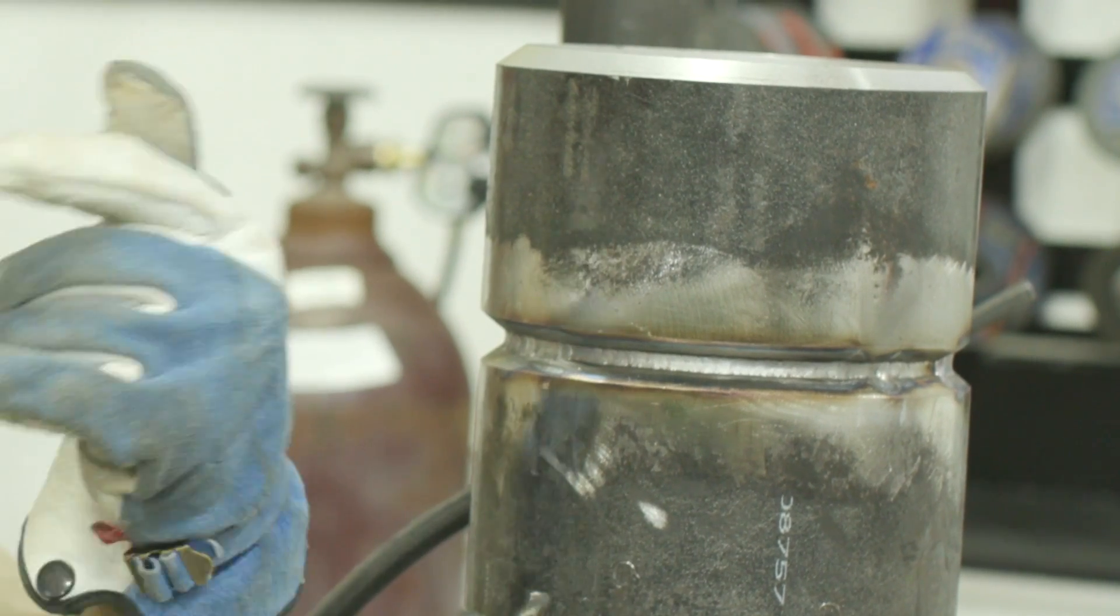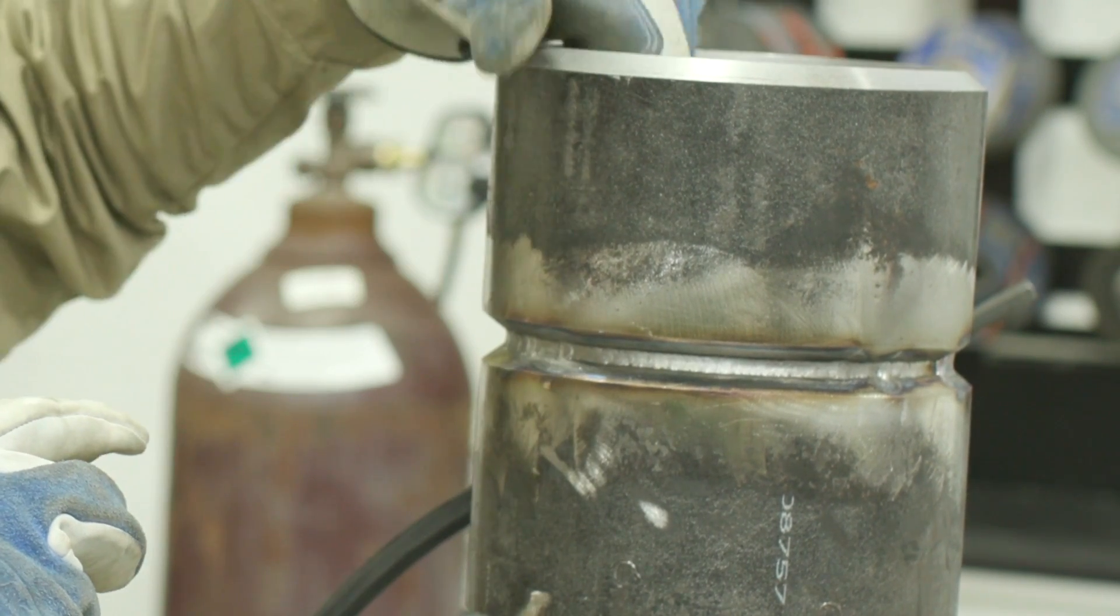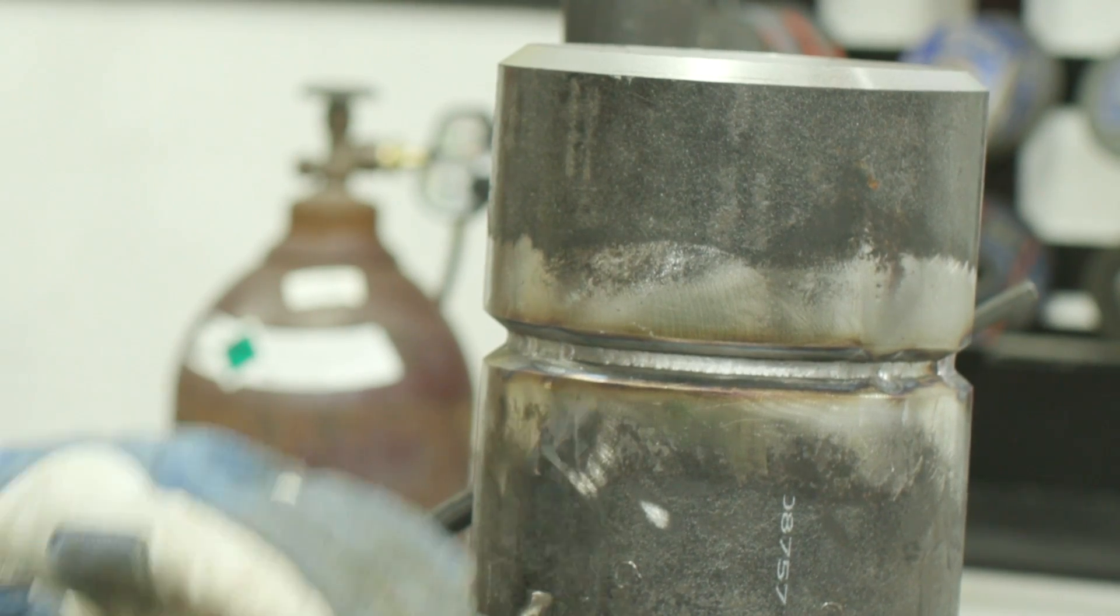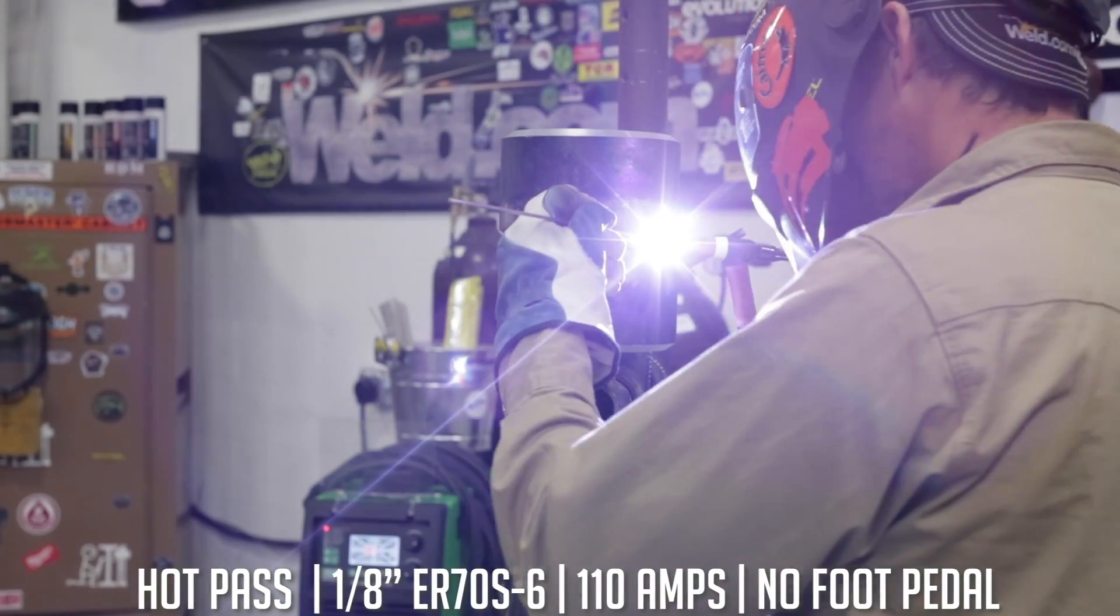So we got the root in here. We're going to put a hot pass on next. The hot pass will push the root out a little bit more on the back side. We don't usually call the inspector over yet because we got to put the hot pass in. Then we call the inspector over. Alright. So we're going to go ahead and get started on this.